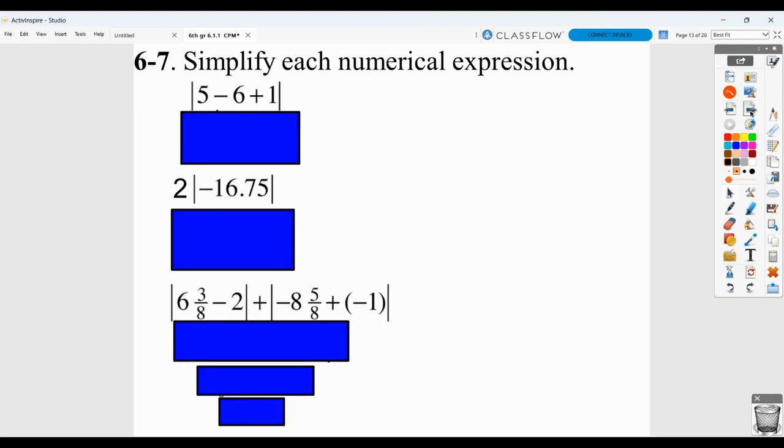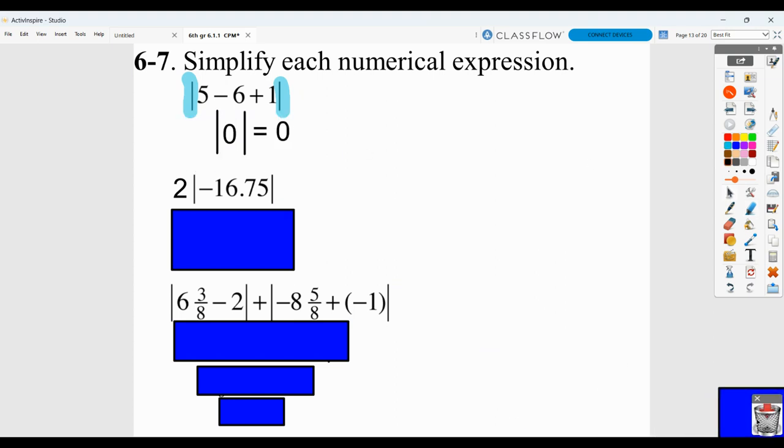Here they want you to simplify these expressions. So remember with absolute value bars, which is what these are, to think of them like parentheses, in that we do everything inside first and then apply that. So five minus six plus one. Well, five minus six is negative one, and if we add one, we get zero. So the absolute value of zero is just zero.